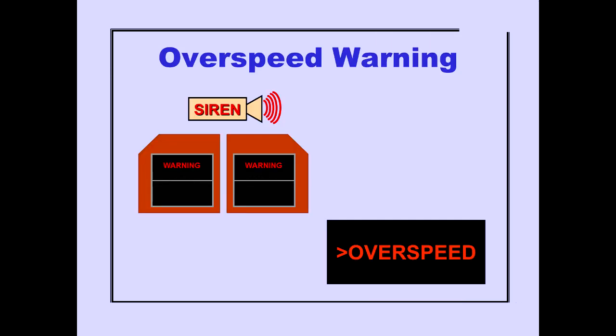The overspeed warning consists of activation of the warning siren, illumination of the master warning lights, and the ICAS warning message Overspeed. The warning remains active until the airspeed is reduced below the operating limit.